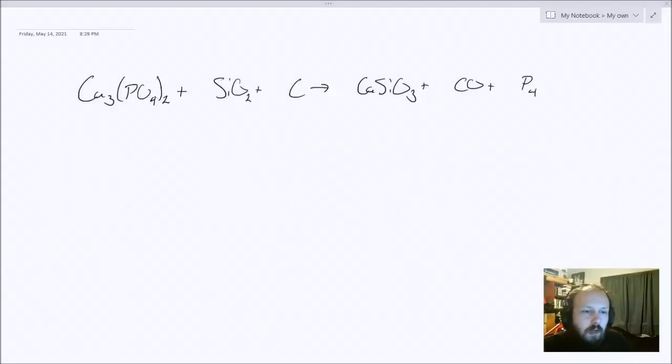For this chemical reaction, I have two elements that are by themselves: carbon here and phosphorus at the end. I will balance these two last.